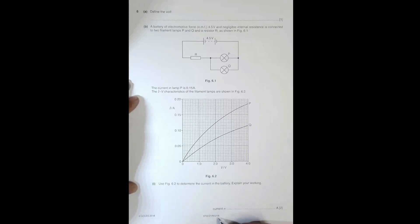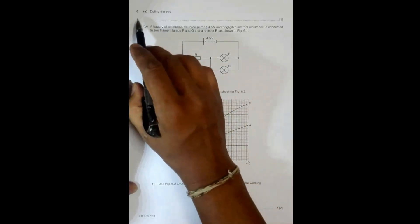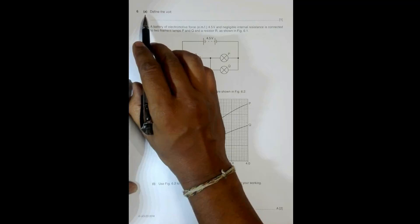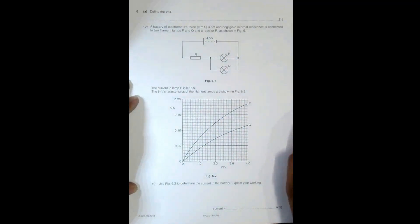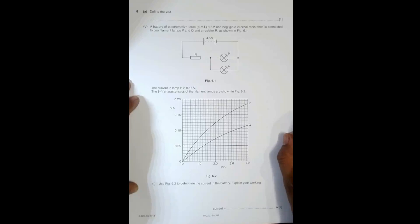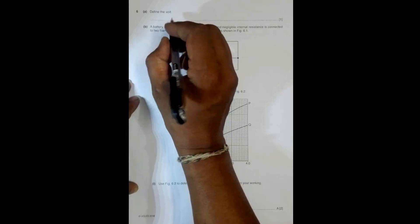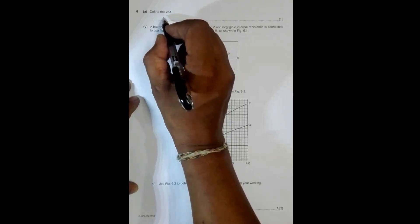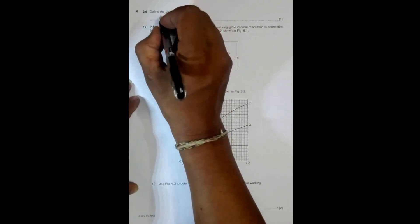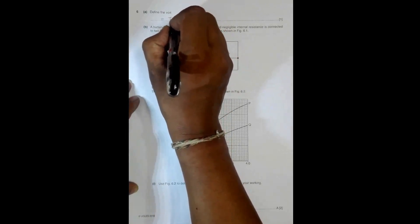This is question 6 from the 2018 major paper 2. The first part asks to define the volt. The volt is the SI unit of potential difference. Since potential difference is the work required to carry unit positive charge across a device, the SI unit of the volt should equal the SI unit of work divided by the SI unit of charge — that is, joules per coulomb.